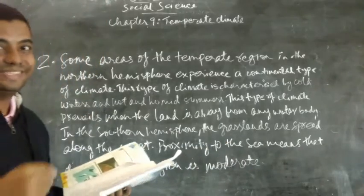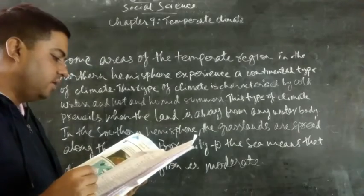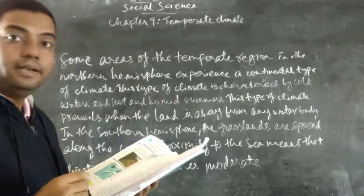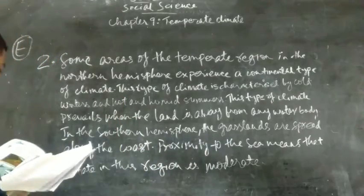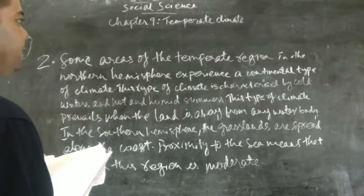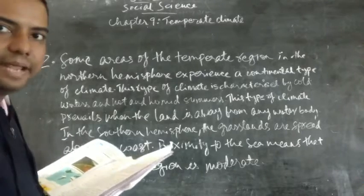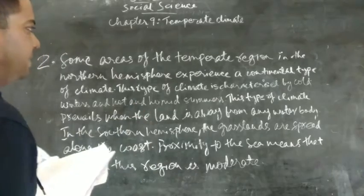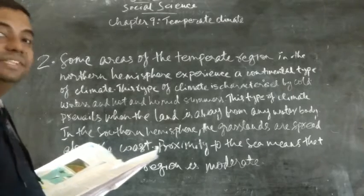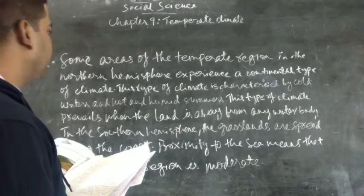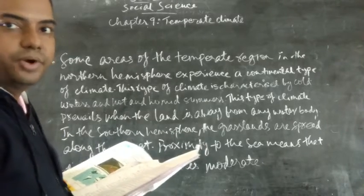Question number 2: Why does the climate vary from severe to moderate in the northern and southern hemisphere? Some areas of the temperate region in the northern hemisphere experience a continental type of climate. This type of climate is characterized by cold winters and hot and humid summers. This type of climate prevails when the land is away from any water body.